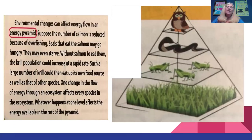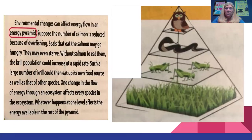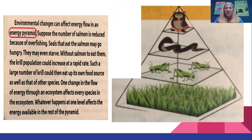If the environment changes, that can affect the flow of an energy pyramid. If salmon is reduced because of overfishing, the seals that eat salmon may go hungry or even starve. If the salmon aren't there, the krill population is going to increase rapidly because they're not being eaten. A large number of krill could then eat up its own food source as well as other species. One change in the flow of energy in an ecosystem affects all the other species in that ecosystem, regardless of what level it's at.